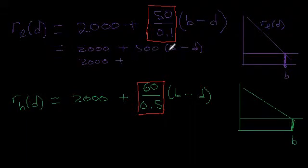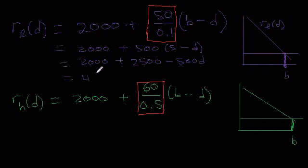And just expanding here, we get 500 times 5, that's 2500 minus 500 D. And then that equals 4500 minus 500 D. So I've just added these two together. So that's our bid rent function for the low income households, right here.